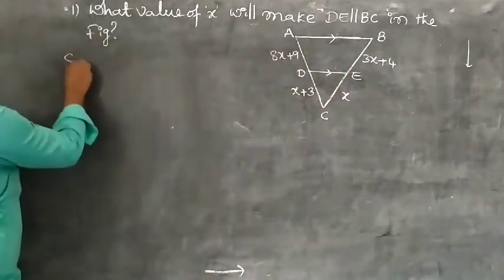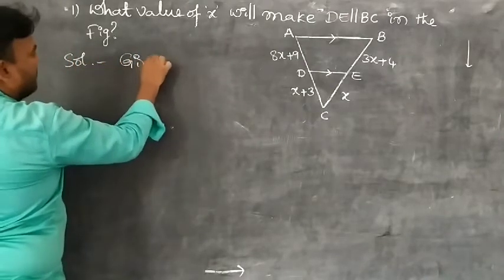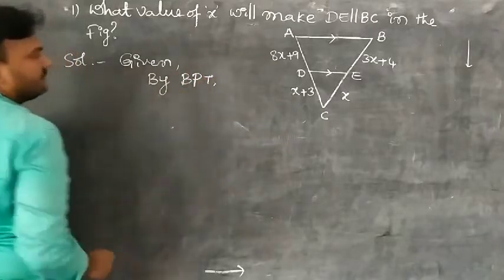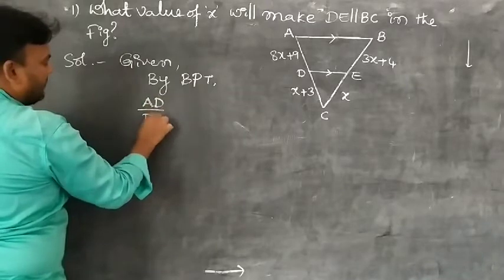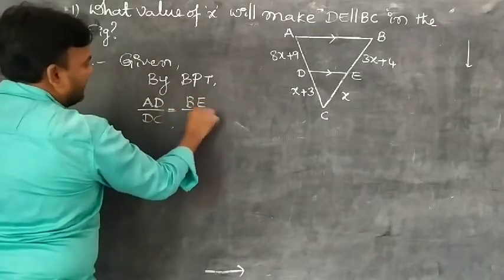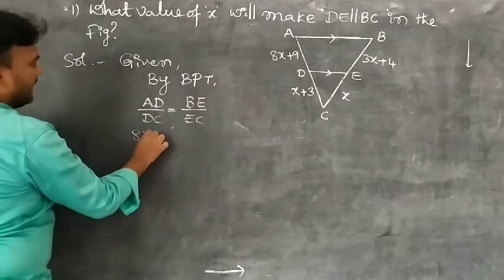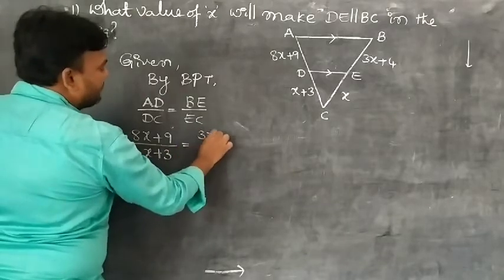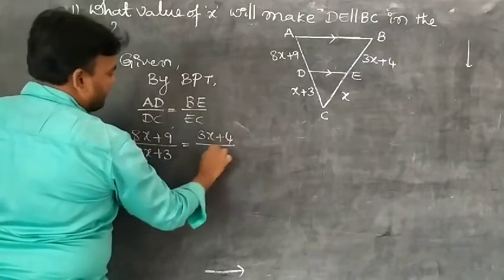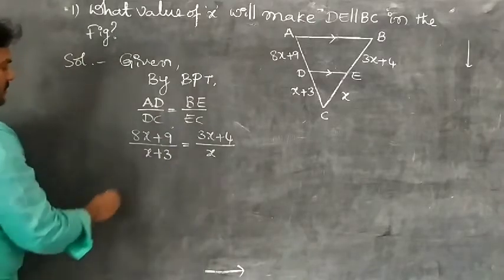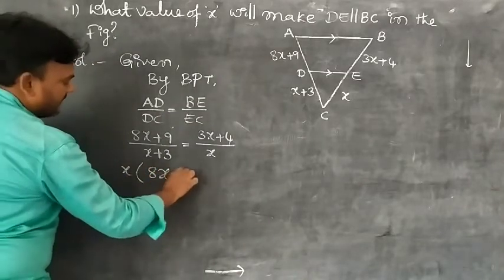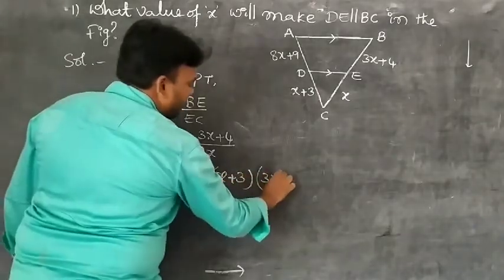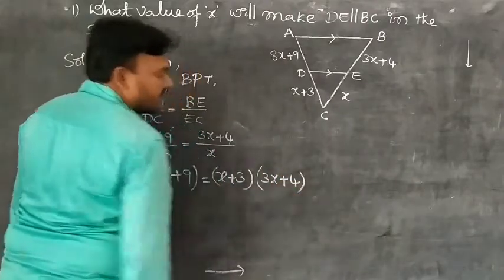So according to the problem, the approach for the solution is: by BPT, AD by DC equals BE by EC. So substituting the given values: AD by DC becomes (8X + 9) by (X + 3), equal to (3X + 4) by X. Now go for cross multiplication students: X times (8X + 9) equals (X + 3) times (3X + 4).